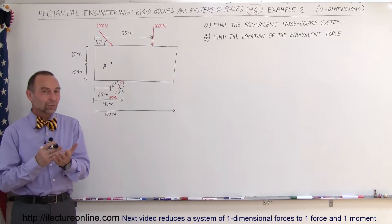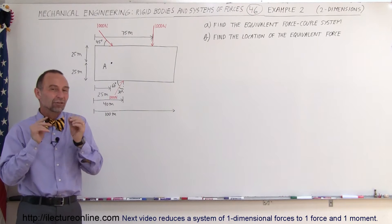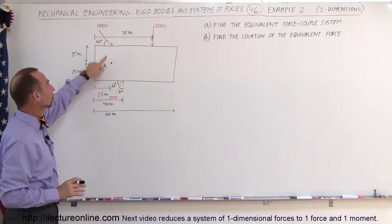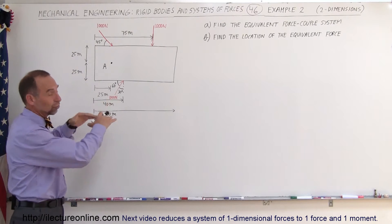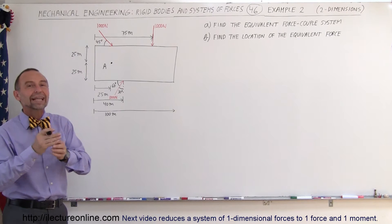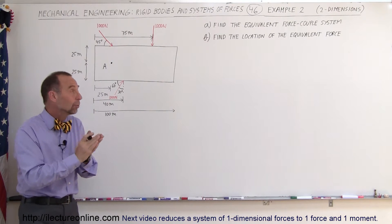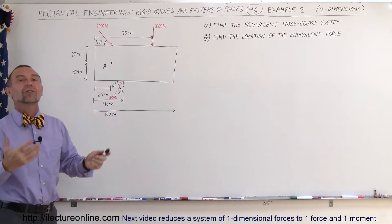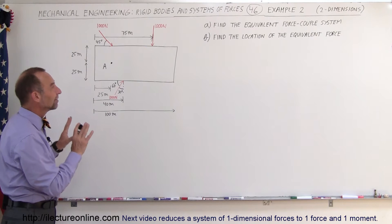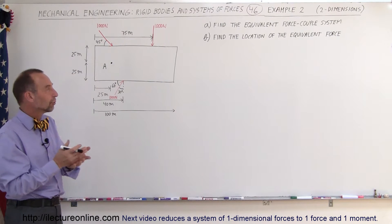Welcome to ElectronLine. In this second example, we're trying to find the equivalent force couple system at point A, and then the equivalent force acting at some point — we need to find where that point is so that a single force can replace all the forces acting on the system. There are three forces causing an equivalent force and a moment at point A.